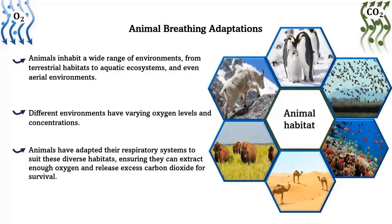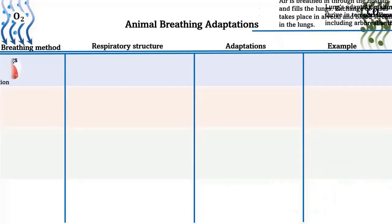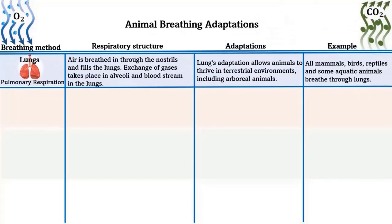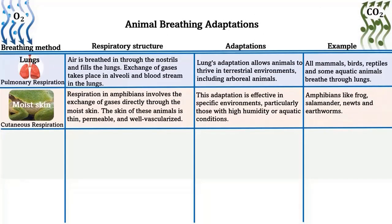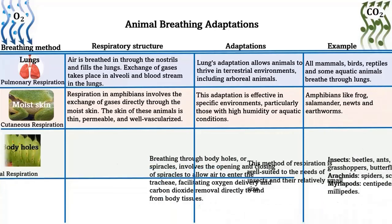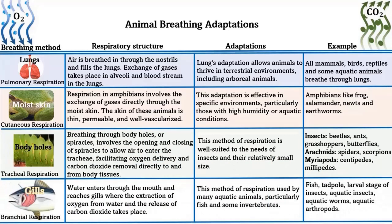Animal breathing adaptations: animals inhabit a wide range of environments from terrestrial to aquatic ecosystems and even aerial environments. Different environments have varying oxygen levels and concentrations. Animals have adapted their respiratory systems to suit this diversity, ensuring they can extract enough oxygen and release excess carbon dioxide for survival. Some animal breathing adaptations include: breathing through lungs (pulmonary respiration), breathing through moist skin (cutaneous respiration), breathing through body holes (tracheal respiration), and breathing through gills (branchial respiration). Let us see these adaptations in detail.